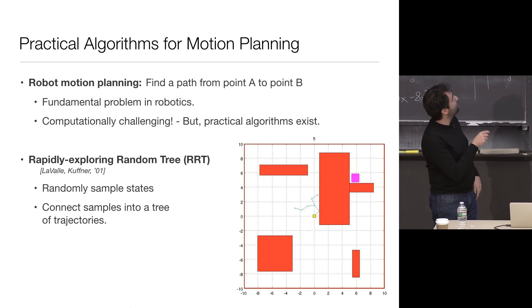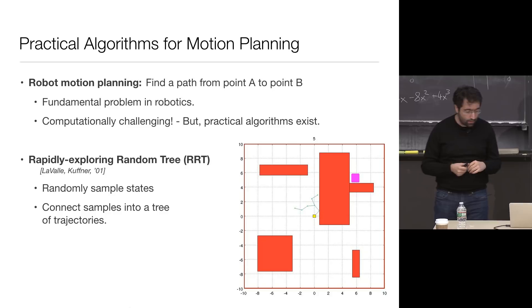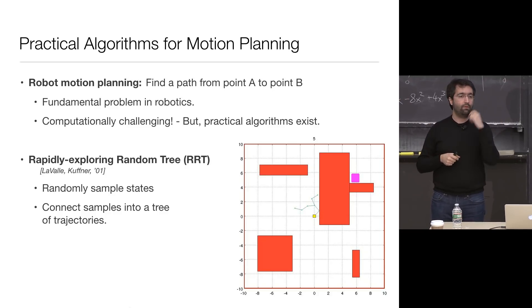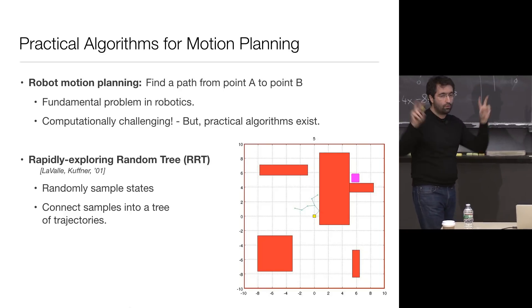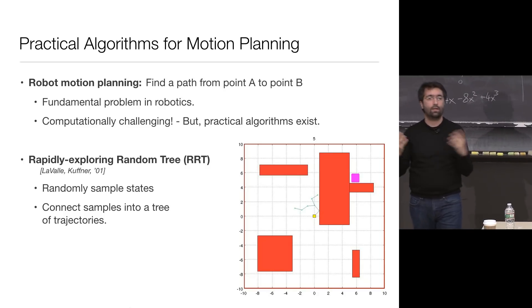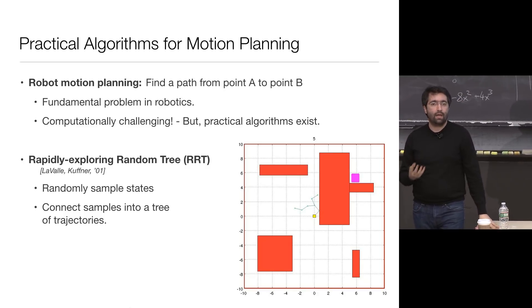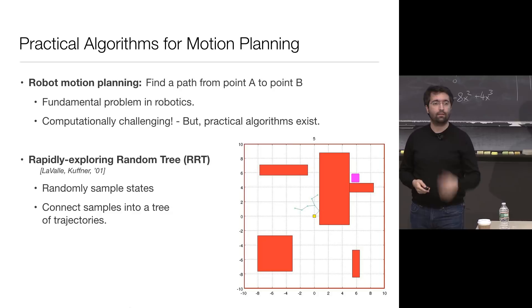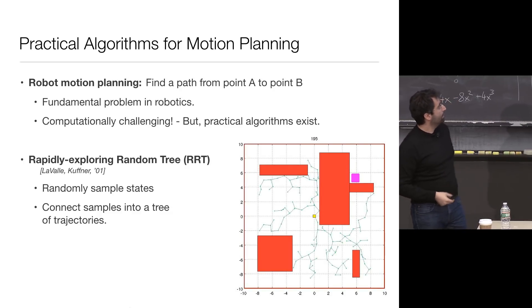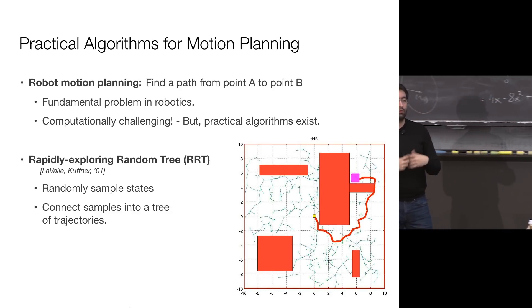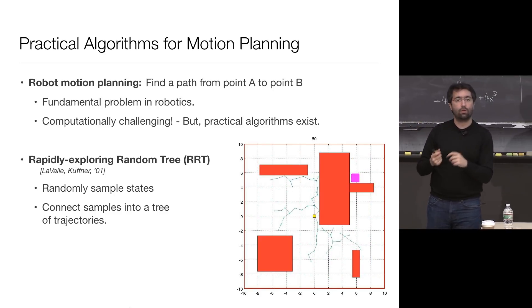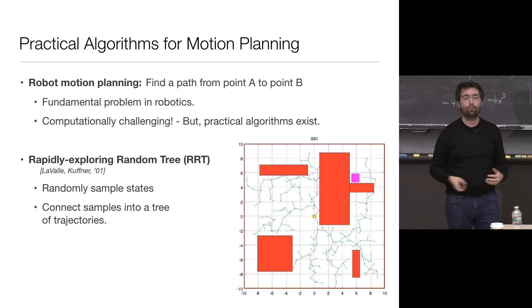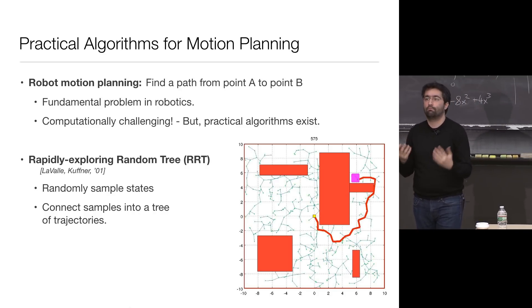The algorithm was called Rapidly Exploring Random Tree. The idea is simple: you land on a bunch of random samples. Every time you put a random sample, you connect it to the nearest node in a tree of trajectories that you're building. In this way, you rapidly explore the state space to find paths. Some of these paths may reach the goal — that's the path you pick. It's just sampling the environment, building a set of trajectories that don't collide with obstacles. If a trajectory collides with an obstacle, you delete it and move on.